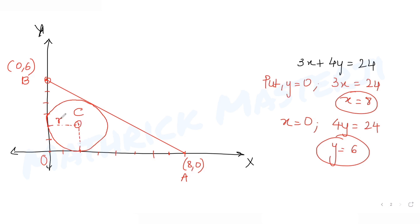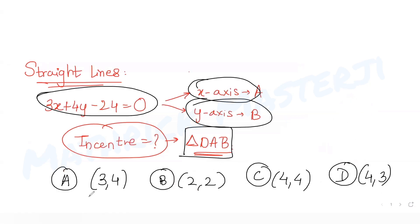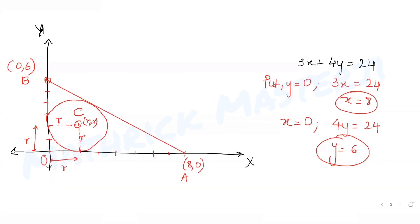The radius from the center to the x-axis is r, and the radius from the center to the y-axis is also r. So the x and y coordinates of the incenter are both equal to r — that is, the center is at (r, r). This immediately cancels options A (3,4) and D (4,3), since their x and y coordinates are not equal.